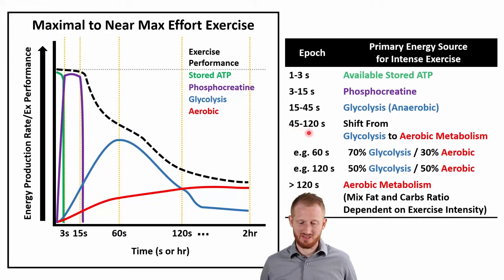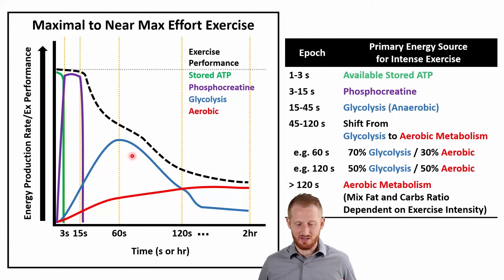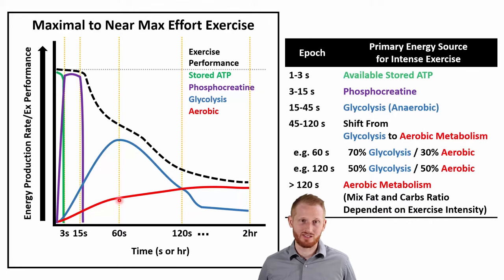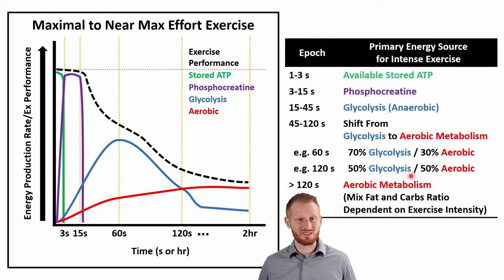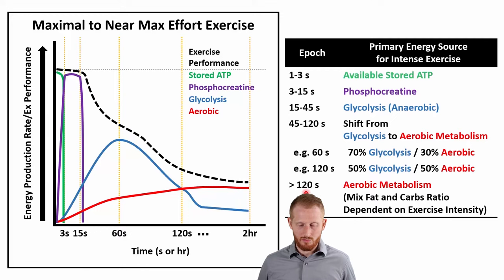From 45 seconds to 120 seconds, for example at the 60-second time point, about 70% of the energy is coming from anaerobic-style glycolysis and about 30% from aerobic metabolism primarily through glycolysis using pyruvate via the aerobic pathways. Going from one minute to two minutes, this is the point where aerobic and anaerobic metabolism cross — at two minutes we're at 50% anaerobic and 50% aerobic, with aerobic metabolism still primarily using the end products of glycolysis.